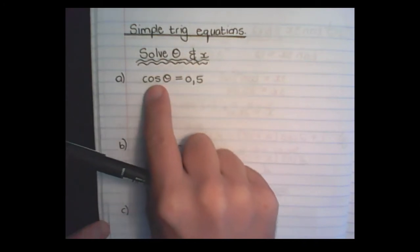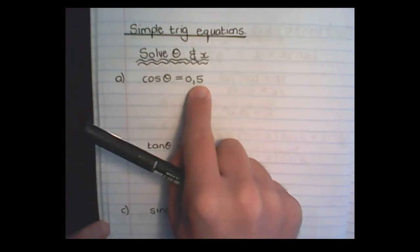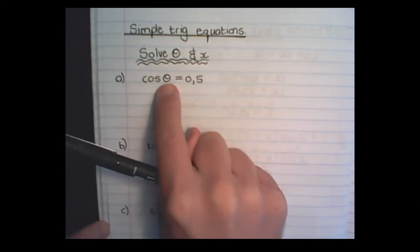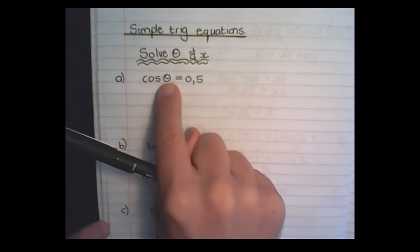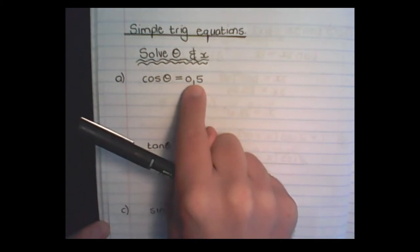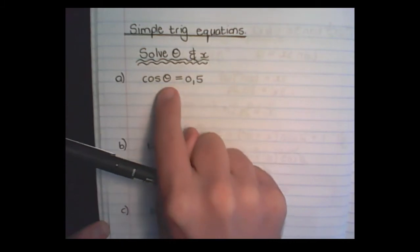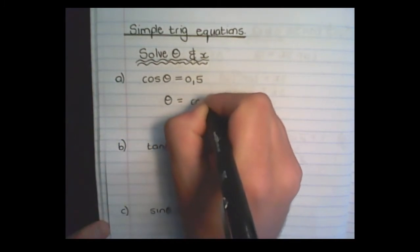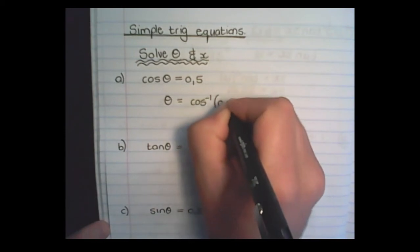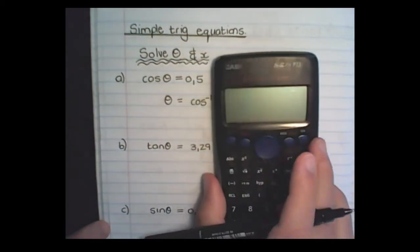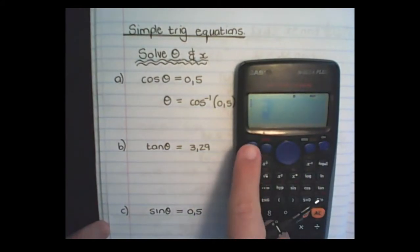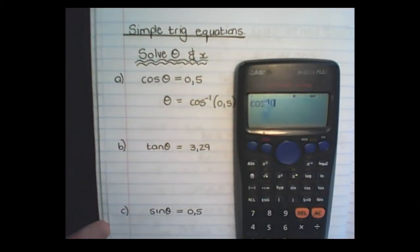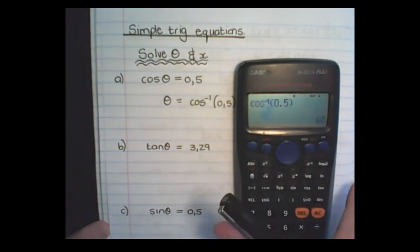Our first example is cos theta is equal to 0.5. Now in order to find cos theta, I need to find the value for theta which will make this 0.5, so I need to reverse the trigonometric function. I simply use the reverse function on the calculator — I press shift, cos, it will go to cos to the power of negative 1, and then I put in 0.5, close the bracket, and I can see 60 degrees.